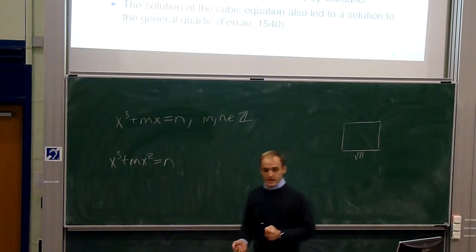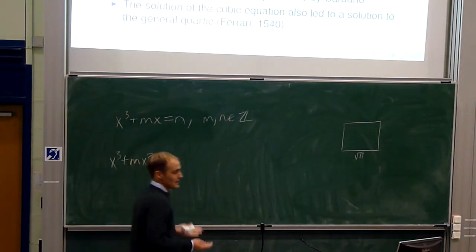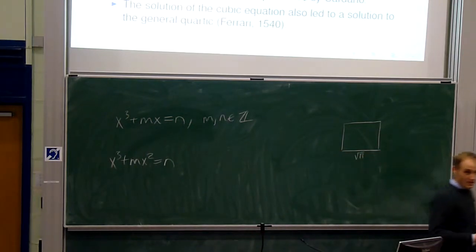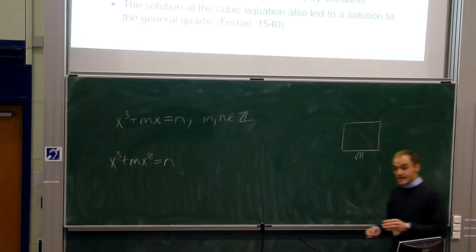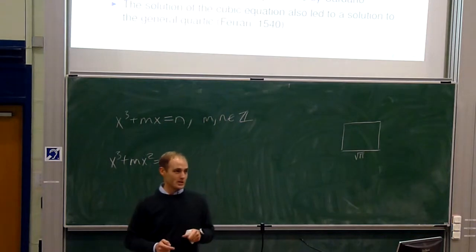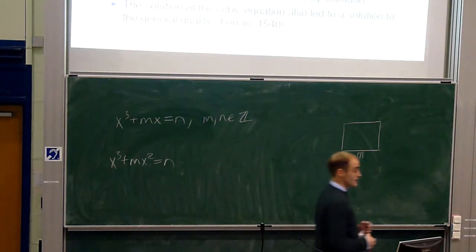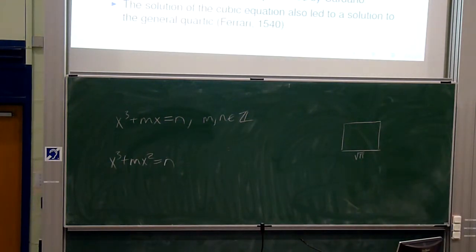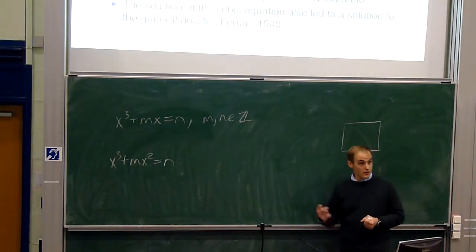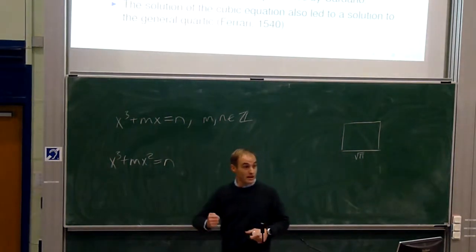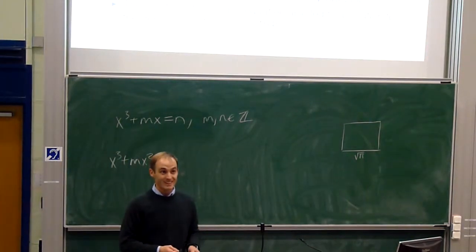Then a guy named Cardano came along and asked Tartaglia to tell him the secrets of the cubic equation. Tartaglia agreed only on the condition that Cardano not publish it before Tartaglia published his own work. Cardano agreed and Tartaglia told him. But a few years later, Cardano found out that del Ferro had already figured out how to solve the cubic, so he thought he wasn't really publishing Tartaglia's work — he was publishing del Ferro's. So he published it, and now it's called Cardano's formula.